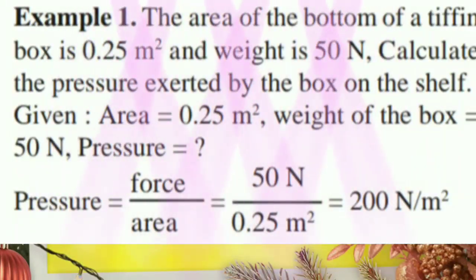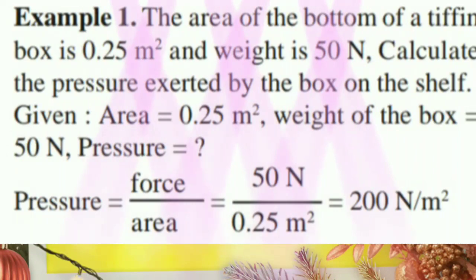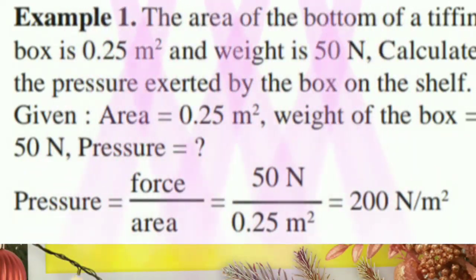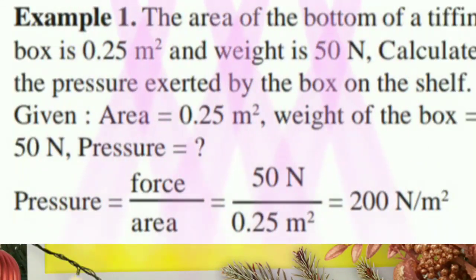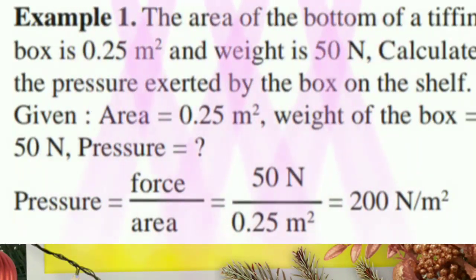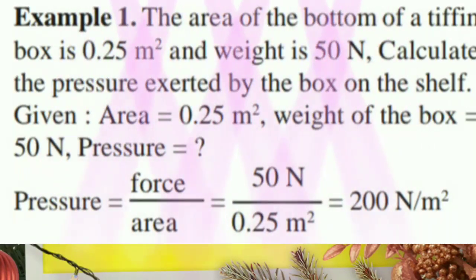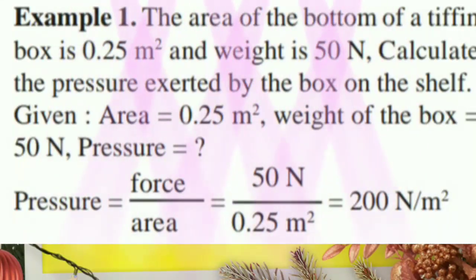Let us see the first solved sum. The area of the bottom of a tiffin box is given 0.25 meter square and weight is given 50 newton. Calculate the pressure exerted by the box on the shelf. Here pressure is equal to force upon area, so force is 50 newton divided by area that is 0.25 meter square. When you will divide, you will get the answer 200 newton per meter square. Hopefully you are getting the sum students.